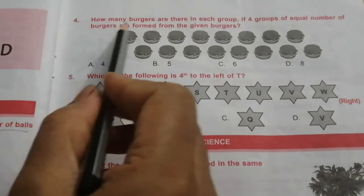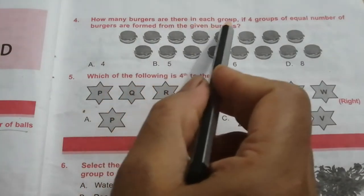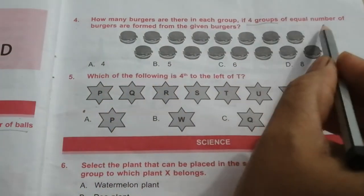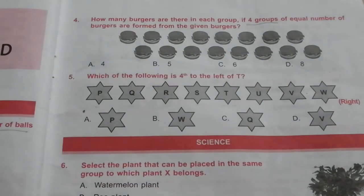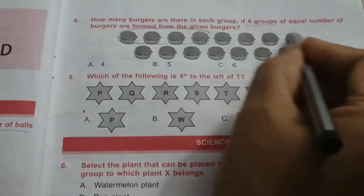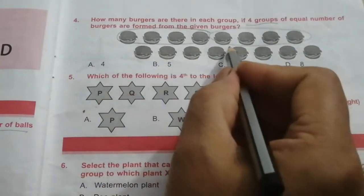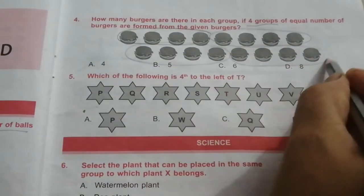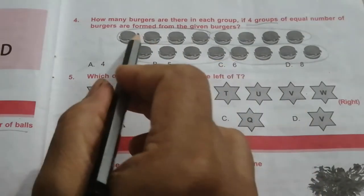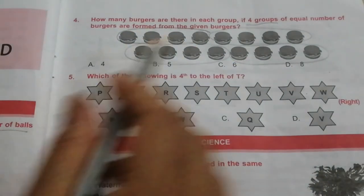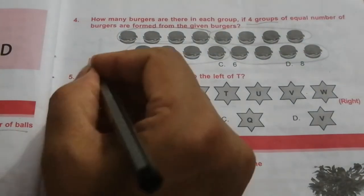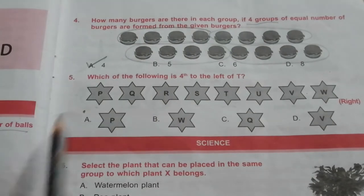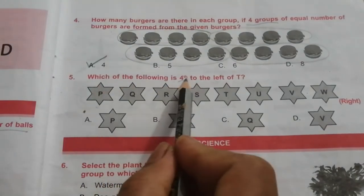Question 4: How many burgers are there in each group if four groups of equal number of burgers are formed from the given burgers? Each group should have 4 burgers. Counting the groups — 1, 2, 3, 4 — there are four groups. The answer is A: 4.